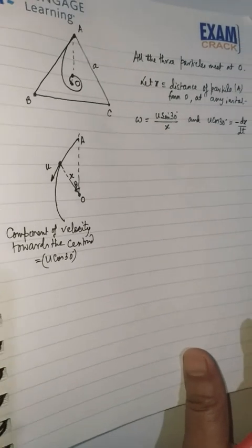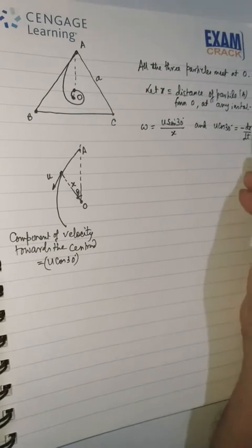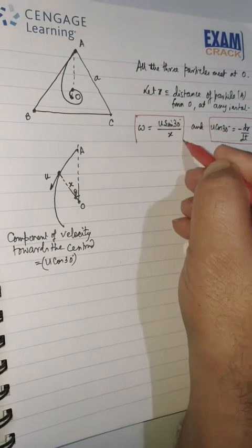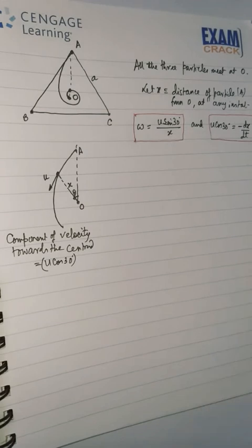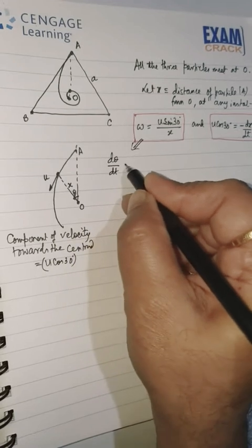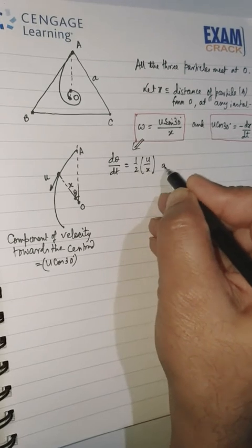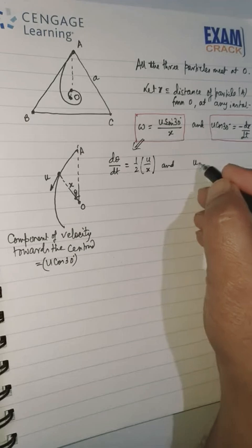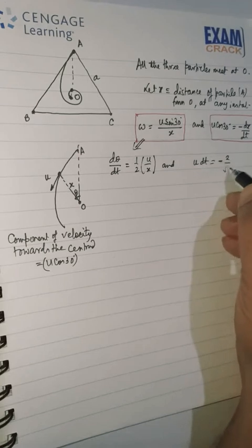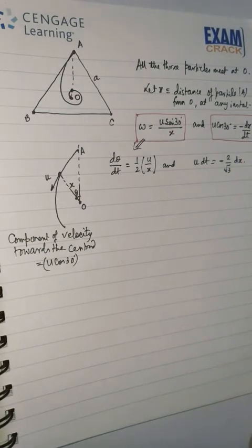Just see, I have tried to write it like this. U cos 30° is minus dX/dt. And ω, which equals U sin θ divided by X. Now let us handle this. What is ω? Omega equals dθ/dt, and this equals U sin—sin θ is half—so it equals half times U/X. And from here, U dt equals minus—I'm writing this cos 30°—so finally, it will be 2/√3 and dX. Here, the negative sign is because X is decreasing with respect to time.